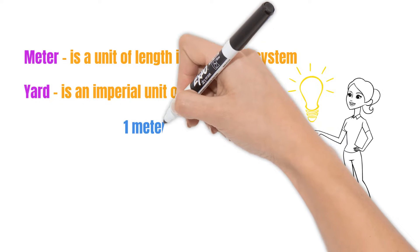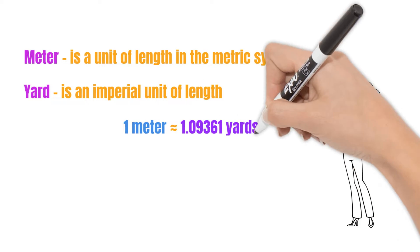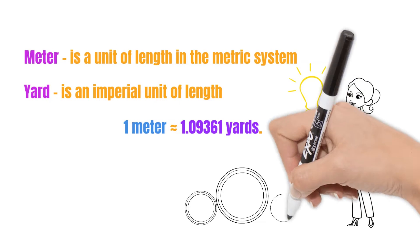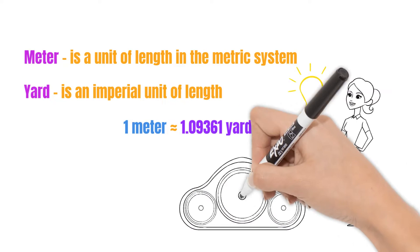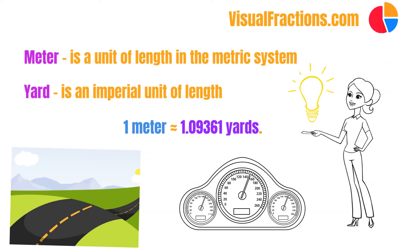One meter is equivalent to approximately 1.09361 yards. To convert meters to yards, you simply multiply the number of meters by 1.09361.